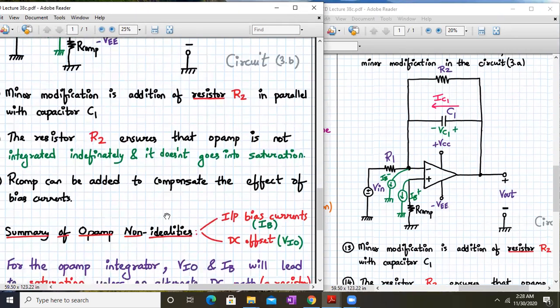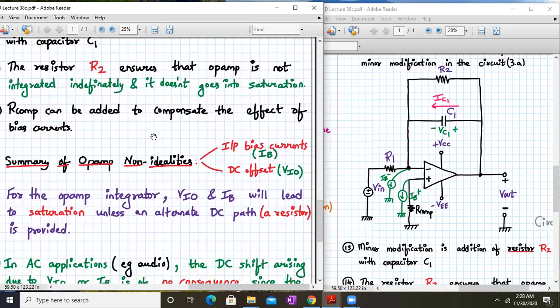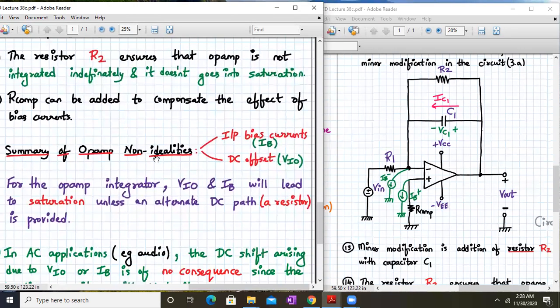The resistor r2 will ensure that op-amp doesn't go into saturation indefinitely. The r_com can be one of the techniques to compensate the effect of bias current, but it's optional. Since we know now what is the r compensation techniques for inverting and non-inverting, similarly you can apply it anywhere.